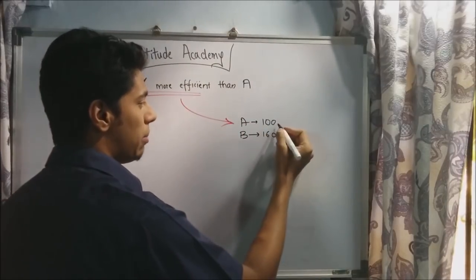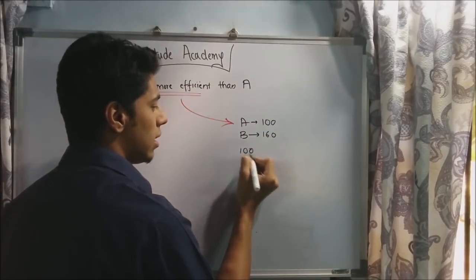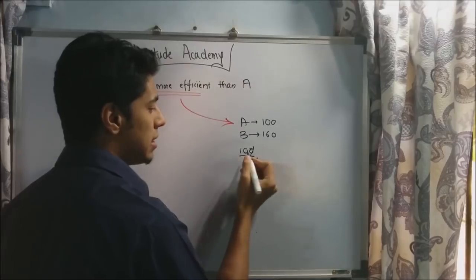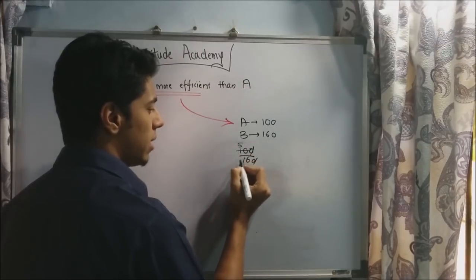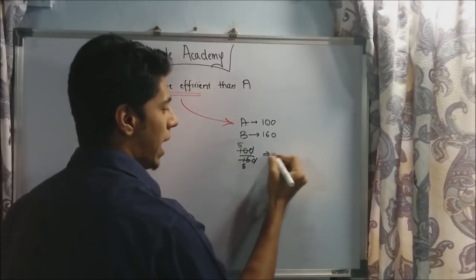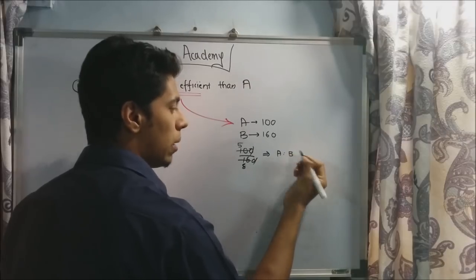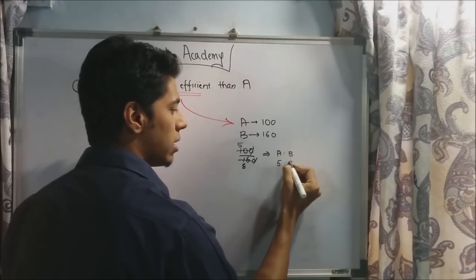If you boil this down to a ratio, it will be 100 is to 160. Cancel this - this will be 2 5s and 2 8s. So A and B will work in the ratio 5 is to 8.